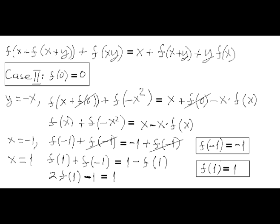f of x plus f of minus x squared equals x minus x times f of x. If we plug in the value x equals minus 1, we will obtain the second point on the graph of function f of x, minus 1, minus 1, so that f of minus 1 equals minus 1.